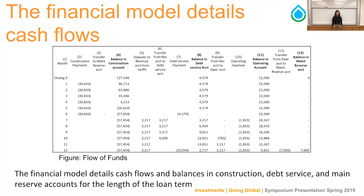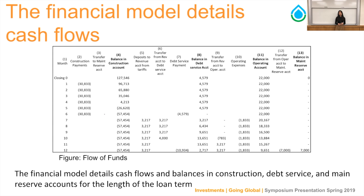The financial model also details cash flows and accounts. Construction payments fund the actual construction costs. Around month seven, once the plant is operating, revenues from water tariffs flow into the debt service account to pay back debt, and also into the operating expenses account for plant operations. Every year, cash also flows toward the maintenance reserves account in case additional maintenance costs are incurred.